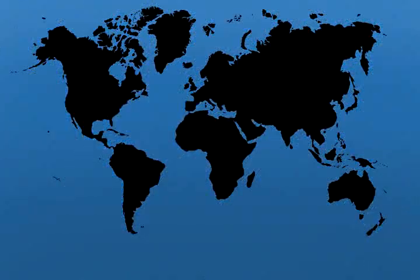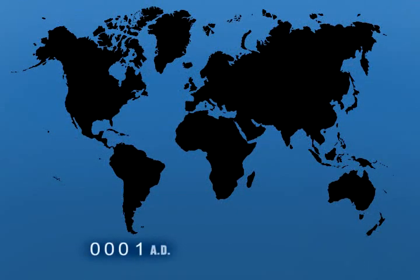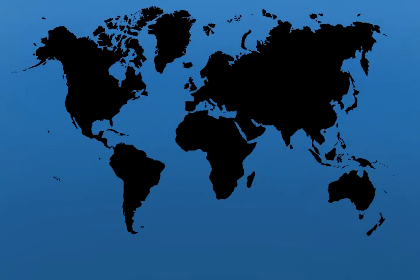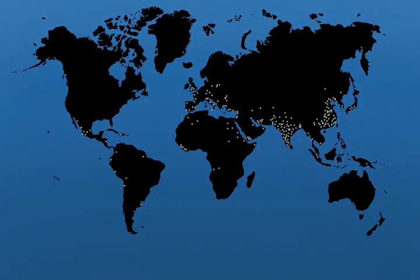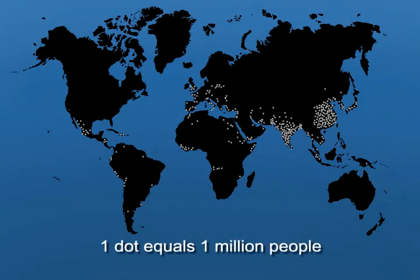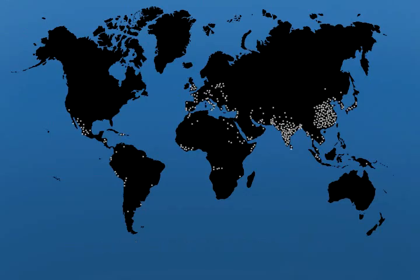On this map, we'll show population growth from the year 1 A.D. to present, and then project our growth into the year 2030. Population concentrations will be indicated by dots, each of which will represent 1 million people. In areas where people are spread out and don't live in concentrations of 1 million, dots are placed in the middle of their approximate range.